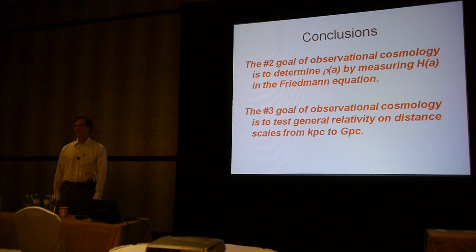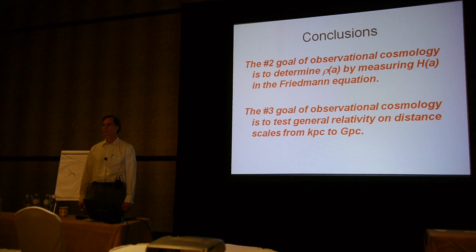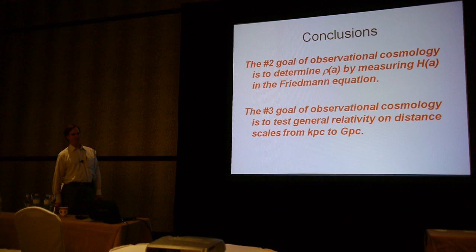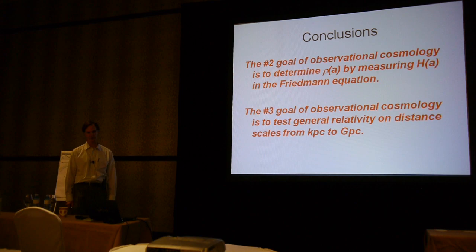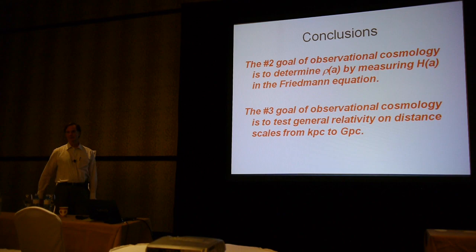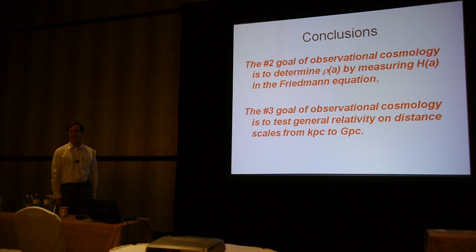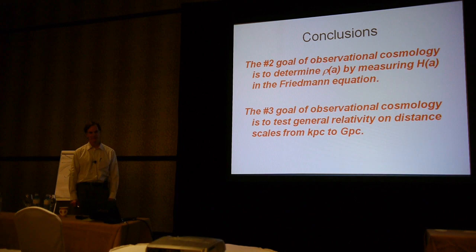Let me wrap up by reminding you that I began this series of lectures with goals of observational cosmology. One was to determine the mean density of the universe through the Friedmann equation and the Hubble expansion parameter. I hope this series of lectures has shown that perhaps that's not quite the correct way of thinking if you want to test general relativity. The third goal of observational cosmology is to test general relativity theory on large scales, and we are making significant progress. There are now good tests of γ_PPN on kiloparsec scales, and tests through weak lensing and peculiar velocities on tens of megaparsec scales.